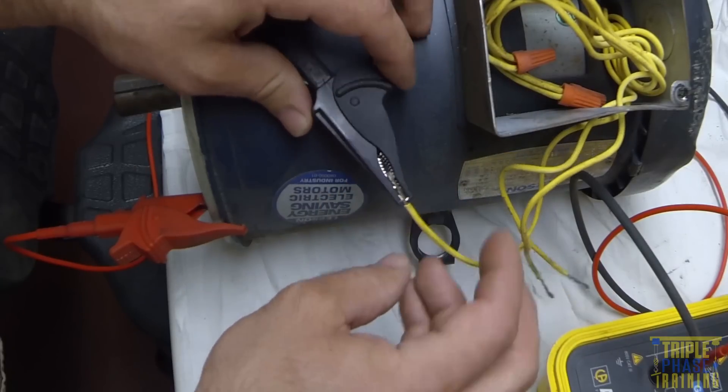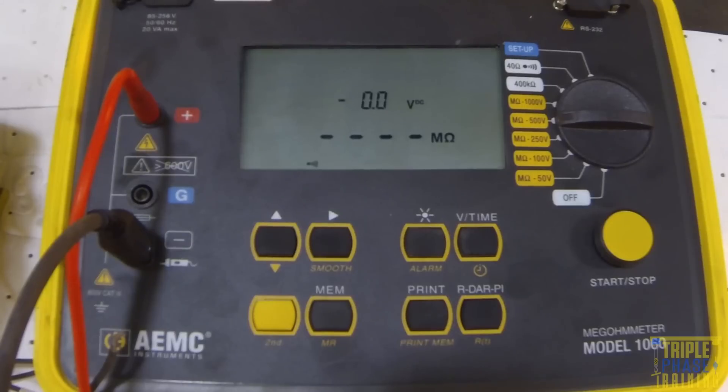You must select the voltage range on the meter that matches the motor you are testing. This is a 480 volt motor, so the dial is set to a 500 volt test.